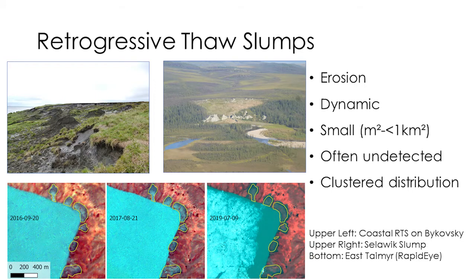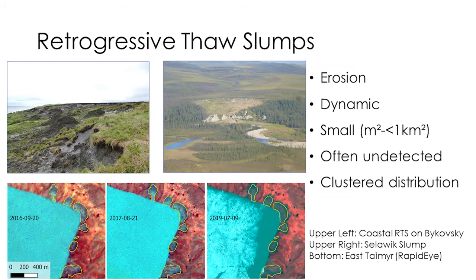Thaw slumps are typically clustered. We see big clusters in northwestern Canada at the ice-marginal areas of the Laurentide Ice Sheet — the Peel Plateau is quite prominent, Banks Island, Victoria Island. In Alaska not so much — the Selawik slump, the Nortuck region, the Brooks Range foothills. But there are also many unknown places in Russia and Siberia where we do have thaw slumps but they are not thoroughly mapped.